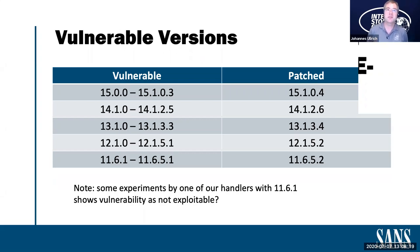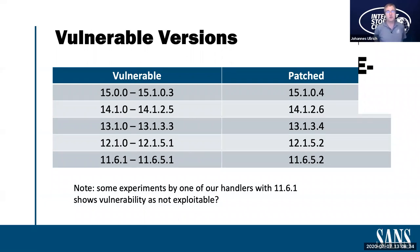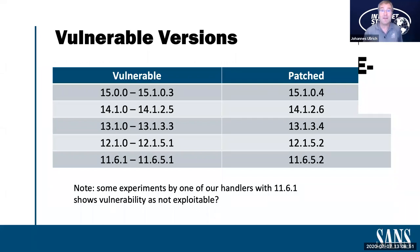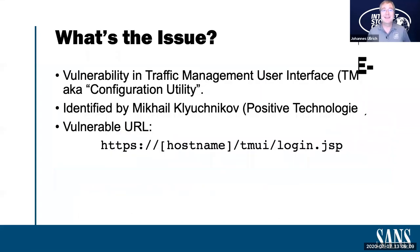As far as versions go, F5 is pretty good at supporting older versions, going down to version 11. Pretty much all currently supported versions are vulnerable — if you didn't patch your F5 last week, you are vulnerable. June 30th, Tuesday last week, is when the patch was released, and anything before that is vulnerable. One of our Internet Storm Center handlers had an 11.6.1 — the earliest supported version — and he actually wasn't able to exploit this particular vulnerability. Some of these older versions may not have all the features enabled by default.